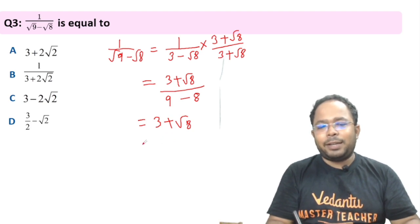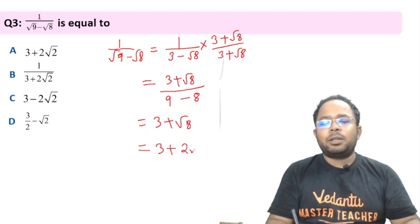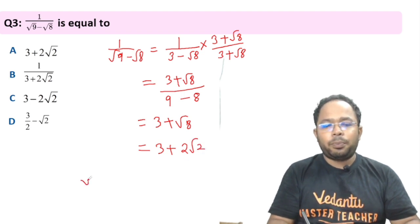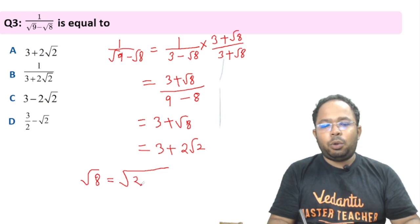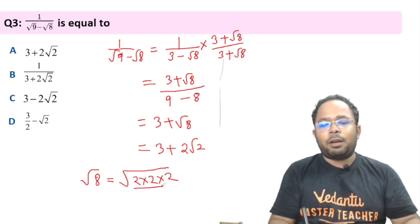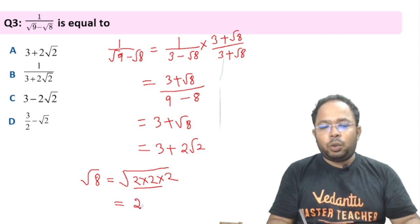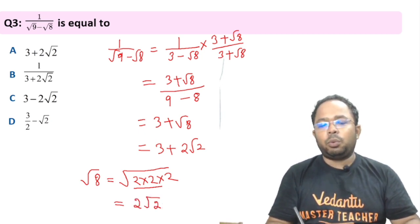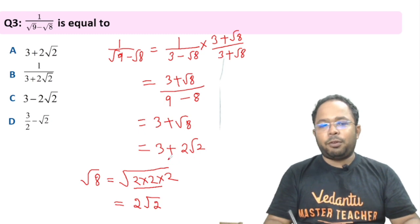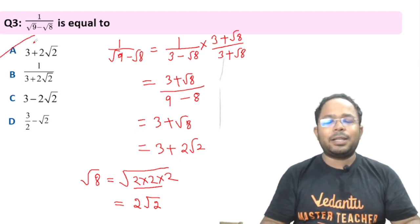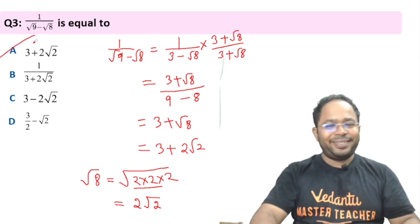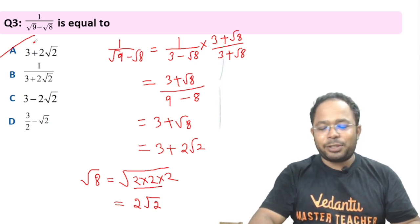We can simplify √8. Since √8 = √(2×2×2), there is a pair of 2s, so √8 = 2√2. Therefore the correct answer is 3 + 2√2. Let's move on to the next question.